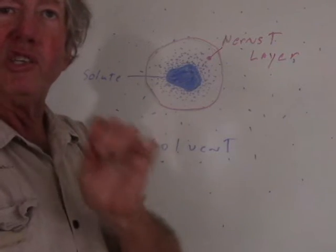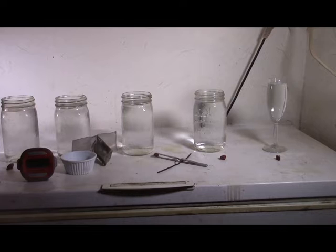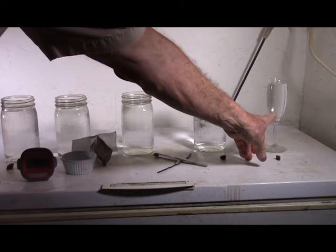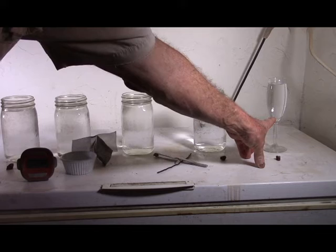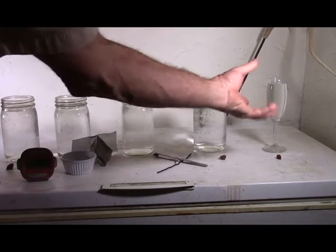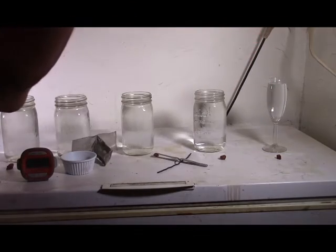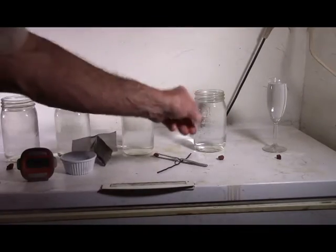Now let me show you this in real life. Here's the setup — what we're trying to do is demonstrate the effect of surface area and the Nernst layer. Here we have a small quantity of water; these are all the same temperature. This simulates very poor percolation, like through a heap leach or a vat leach. All these pieces of salt are the same weight: 2 grams.